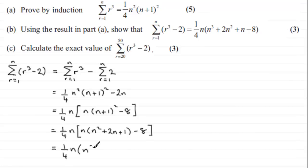n cubed plus 2n squared plus n and then minus the 8. And there you have it, what we had to prove.